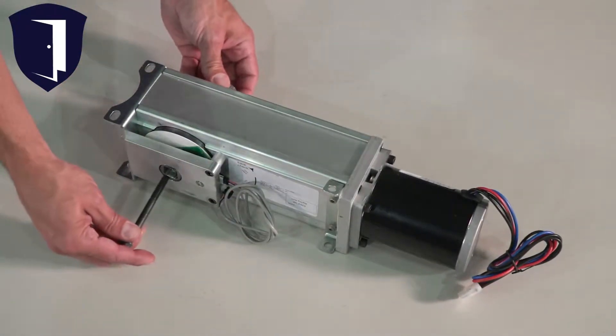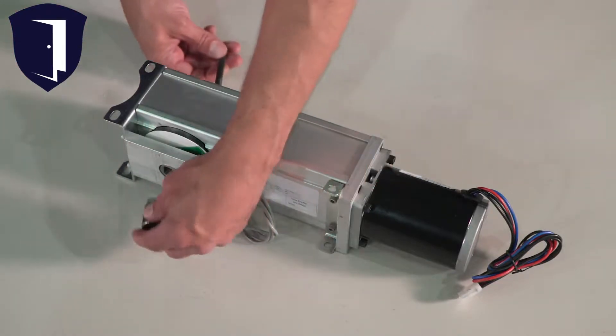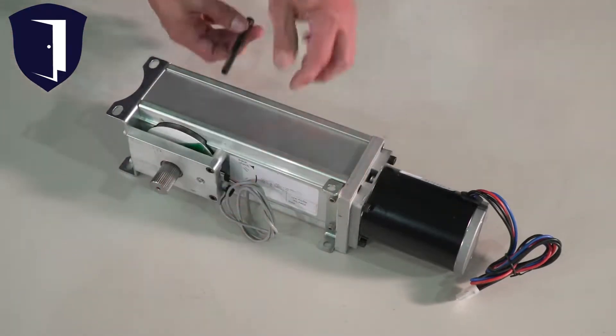Mount the spindle opposite the label side for a right hand installation. Or, in our case, we'll mount the spindle on the label side for a left hand installation.